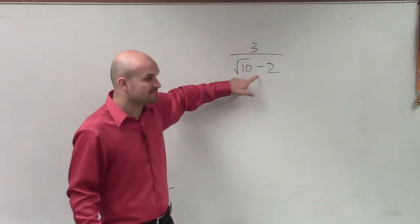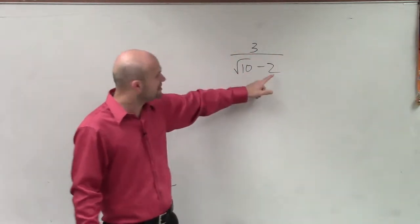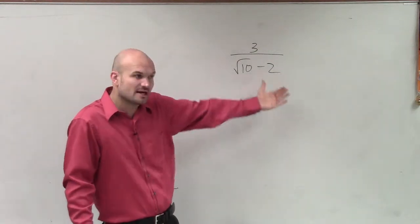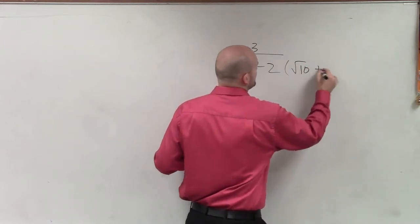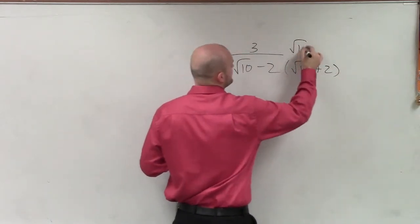Because I can't multiply just by the square root of 10. Because if I multiply the square root of 10, I'm going to multiply 2 times the square root of 10 and I'm still going to have a square root on the bottom. So therefore, I have to multiply by the conjugate. And remember, the conjugate is giving the same form, but now with the opposite sign.